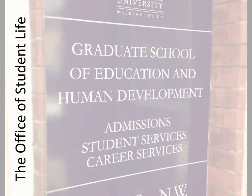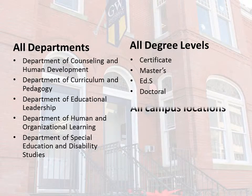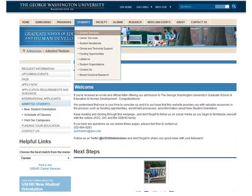The next office housed in the Office of Student Life is Student Services. The Student Services Office works in partnership with your individual program faculty and staff to ensure that you are successful in your academic career here at the Graduate School of Education and Human Development. The Student Services staff provides individualized support for all of our students. Our Advanced Degree Program Coordinators work with students in each of the five departments, across all degree levels, and at all campus locations. A bulk of our resources can be found on the Student Services website. Simply hover your mouse over the Students tab and click the bar on the menu marked Student Services.